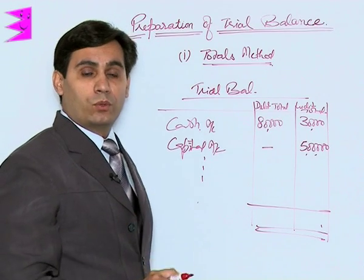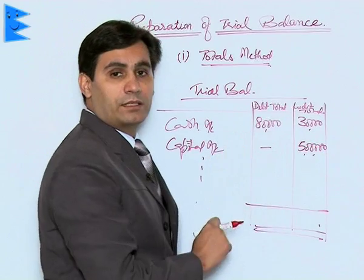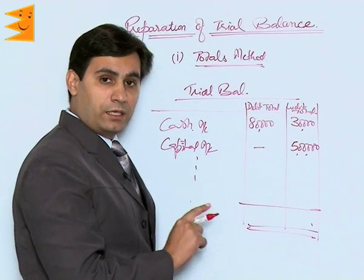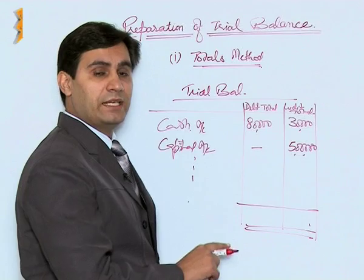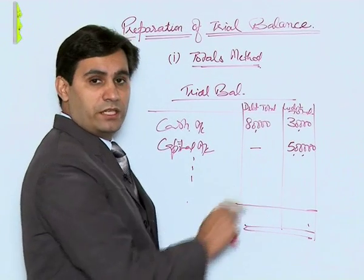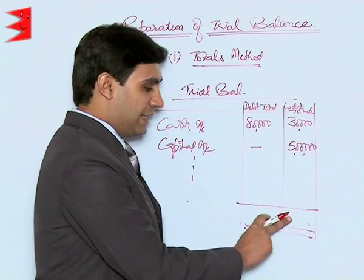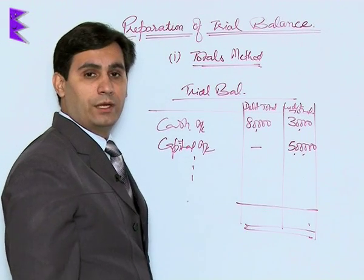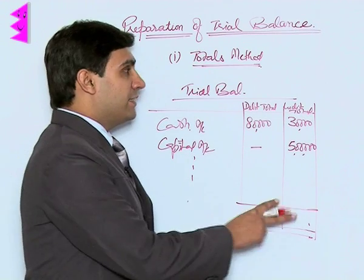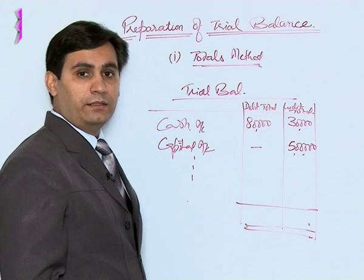Under the totals method, for every account the total of the debit side and the total of the credit side are both shown. At the end, both totals should tally. If they do not tally, that means there is some error which you need to rectify.